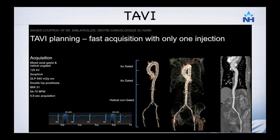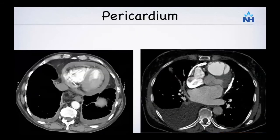TAVI assessment is a separate topic, but CT is excellent in aortic valve planning and is very important as part of TAVI planning. Regarding pericardial pathologies, while cardiac MR differentiates restrictive versus constrictive physiology very well, CT is also excellent in demonstrating areas of pericardial calcification or pericardial effusion when looking at acute inflammatory or chronic constrictive pericarditis features.